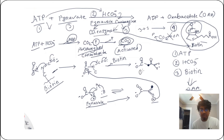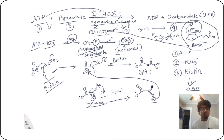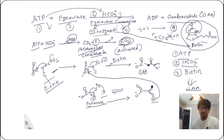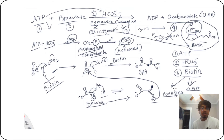This carbon then reacts with that part and produces oxaloacetate, also written as OAA. So the three-carbon pyruvate produces the four-carbon oxaloacetate. To summarize, we need ATP to activate the carbon dioxide and biotin as a coenzyme for this pyruvate carboxylase reaction.